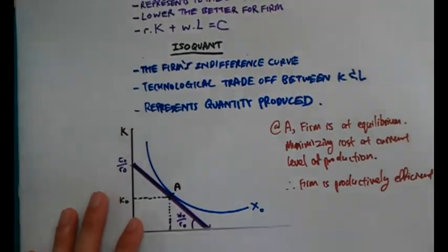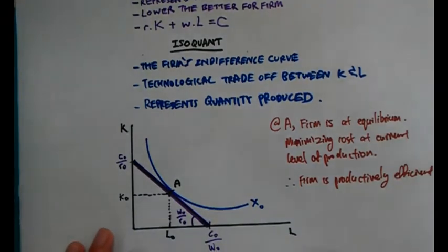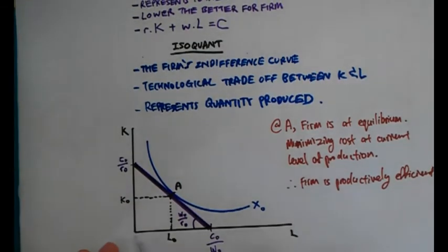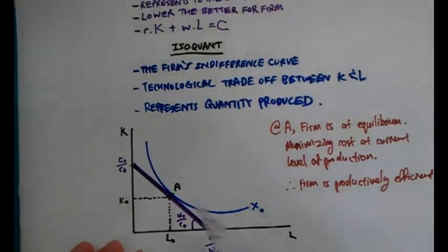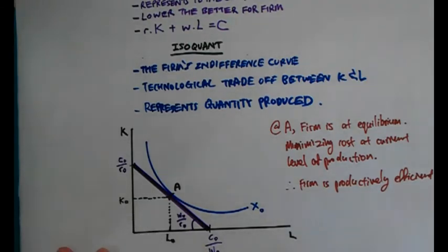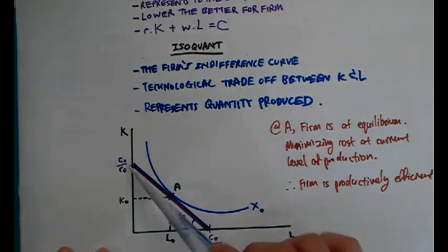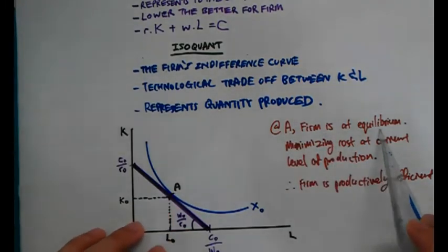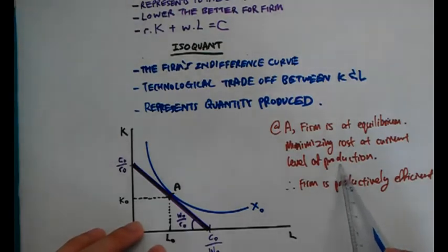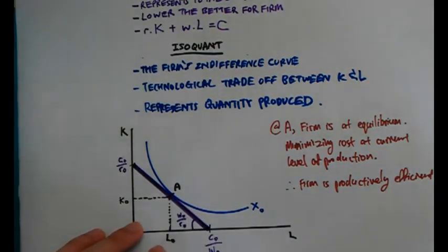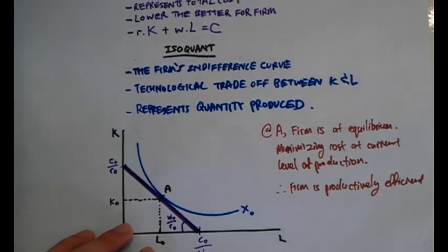Let me give you a graphical example of what these two entities look like. The graph is plotted with the amount of capital on the Y-axis against the amount of labour on the X-axis. It looks very similar to the indifference curve and the budget constraint, though the notations are a little different. You can see the Isoquant here — the higher it goes, the higher the quantity of X produced. For the budget constraint, the lower it is, the lower the cost. At point A, the firm is at equilibrium: it is minimising its cost at the current level of production and making use of resources efficiently. At point A, the firm is productively efficient.